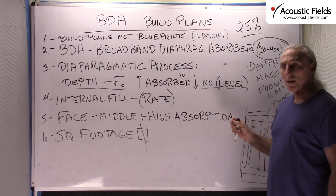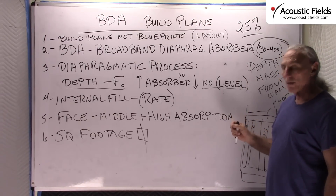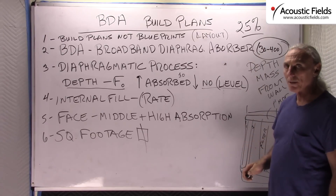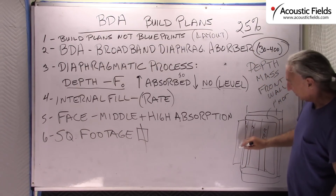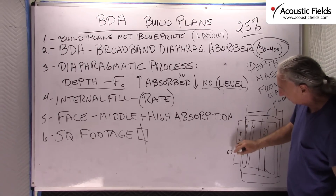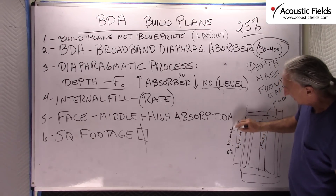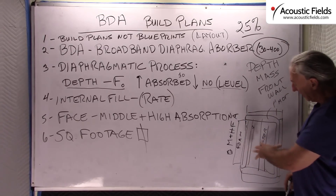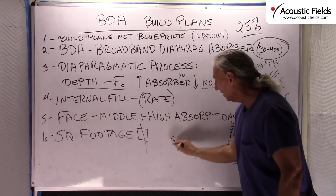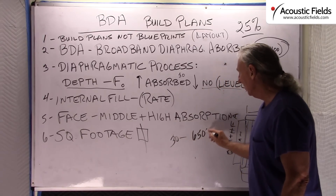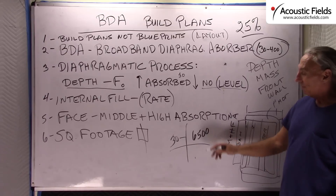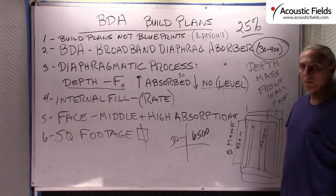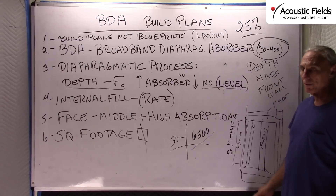The Riverbank Labs test results on our website show the carbon-equipped unit, so you need to deduct about 25% off those numbers because you will not be using carbon in the BDA. You can also put foam on the face of the cabinet — foam is a middle and high frequency absorber. If you put our foam on the front, you can get an absorber that goes from 30 to 6500 Hz — pretty broadband. You get a low frequency absorber and a middle and high frequency absorber all the way up to 6500, and the rates of absorption are incredible.